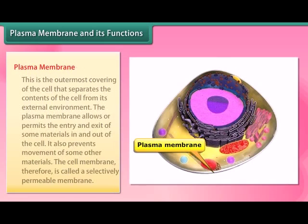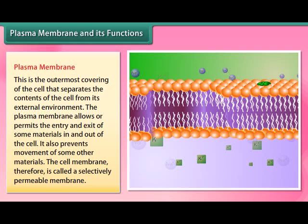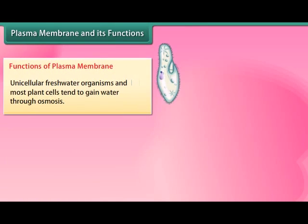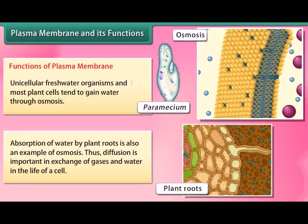The plasma membrane is the outermost covering of the cell that separates the contents of the cell from its external environment. It allows or permits the entry or exit of some materials in and out of the cell, while preventing the movement of other materials. The cell membrane is therefore called a selectively permeable membrane. Unicellular freshwater organisms and most plant cells tend to gain water through osmosis, and absorption of water by plant roots is also an example of osmosis. Diffusion is important in the exchange of gases and water in the life of a cell.